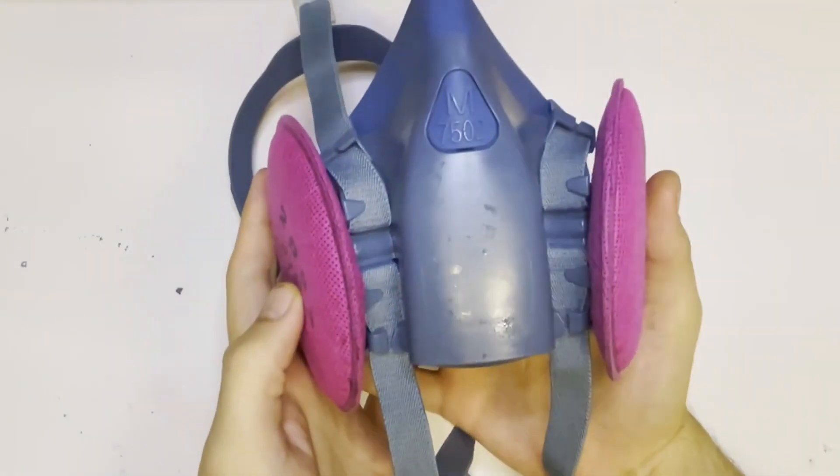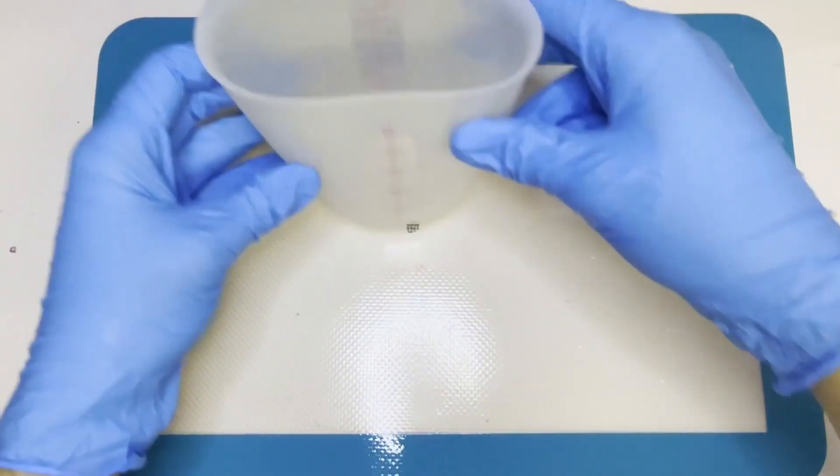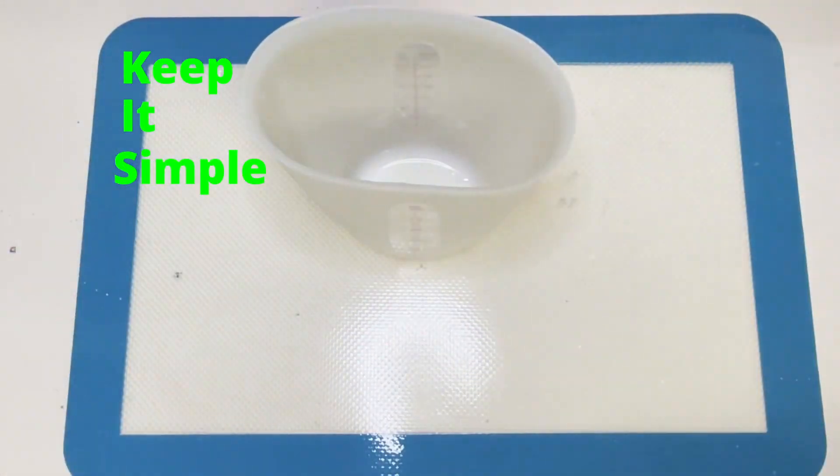The safety equipment is nitrile safety gloves and a mask for the fumes. The KISS principle stands for keep it simple stupid.